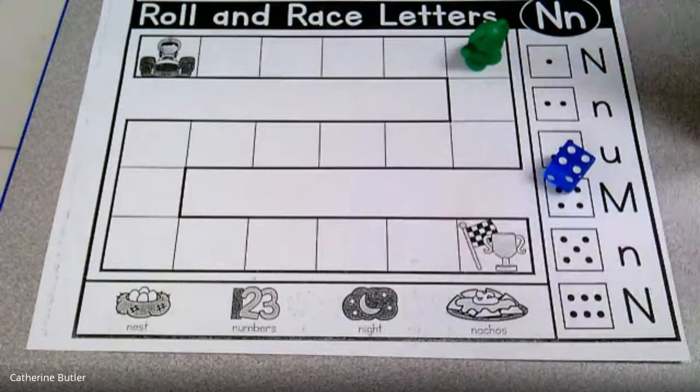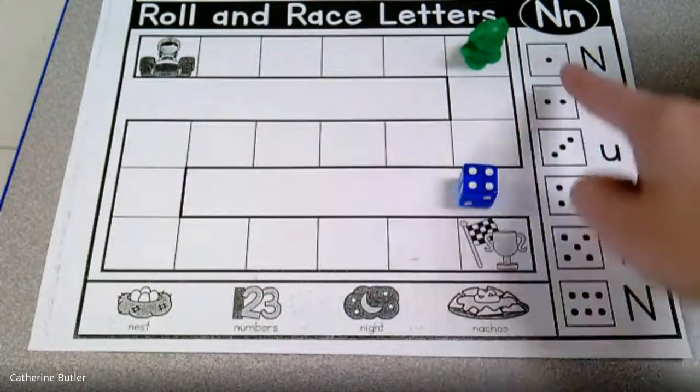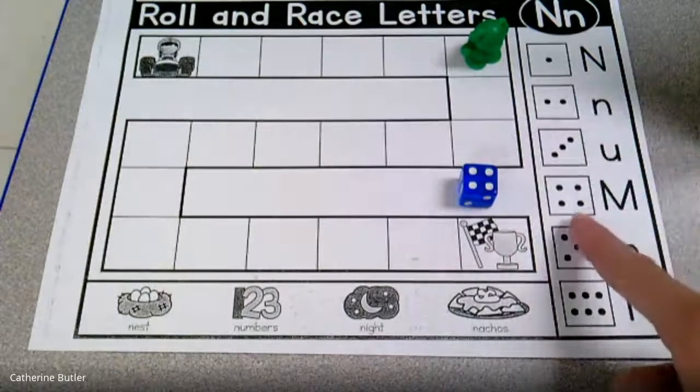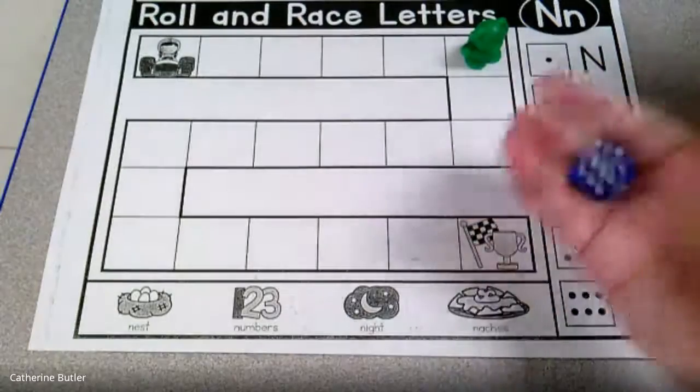Alright, so I'm gonna roll again. Oh, no. Can I go? How many did I roll? Four. Let's see. There's four. Can I go? Is that the letter N? No, it's not. Alright, let me roll again.